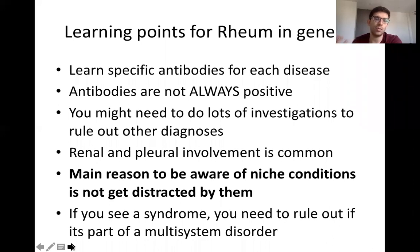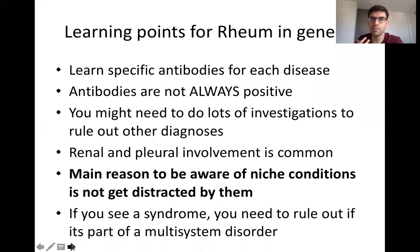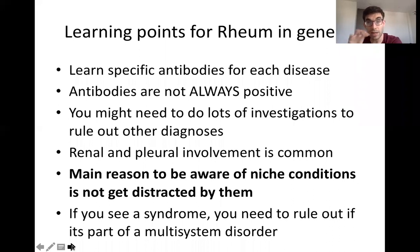Generally speaking, you will want to rule things out. There's a differentiation between syndromes and diagnoses — sometimes you have a syndrome that exists on its own, and sometimes you need to rule out if it's part of a multi-system disorder. For example, if you have esophageal problems, you may need to rule out whether it's related to systemic sclerosis. Expanding your differential and ruling out other causes is very common in rheumatology.